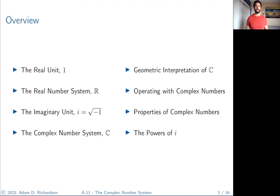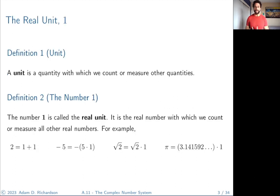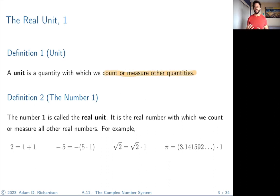First, we need to review what the definition of a unit is. A unit is a quantity with which we count or measure other quantities. Anytime somebody uses the word 'unit,' it's basically a pre-decided amount, and we're going to use that amount to count all other amounts of things of that type.